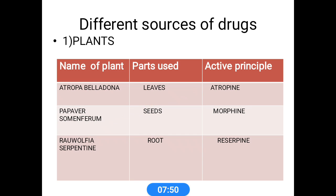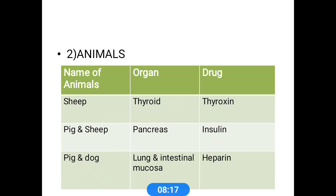Different sources of drugs include natural and synthetic sources. Plant sources are the most well-known and oldest natural source. Examples include Atropa belladonna (atropine), Papaver somniferum (morphine), and Rauwolfia serpentina (reserpine). These are alkaloid plants with different parts showing different active principles. From animal sources, we can obtain drugs like thyroxine, insulin, and heparin.